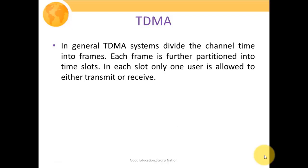In general, TDMA systems divide the channel time into frames; each frame is further partitioned into time slots; and in each time slot, only one user is allowed to either transmit or receive. We divide the complete channel time into frames, each frame is further divided into time slots, and one time slot is provided to an individual user in which it is allowed to transmit or receive. That frame keeps on rotating — when the first frame completes, the second frame with the same sequence appears, then the third frame, and so on.